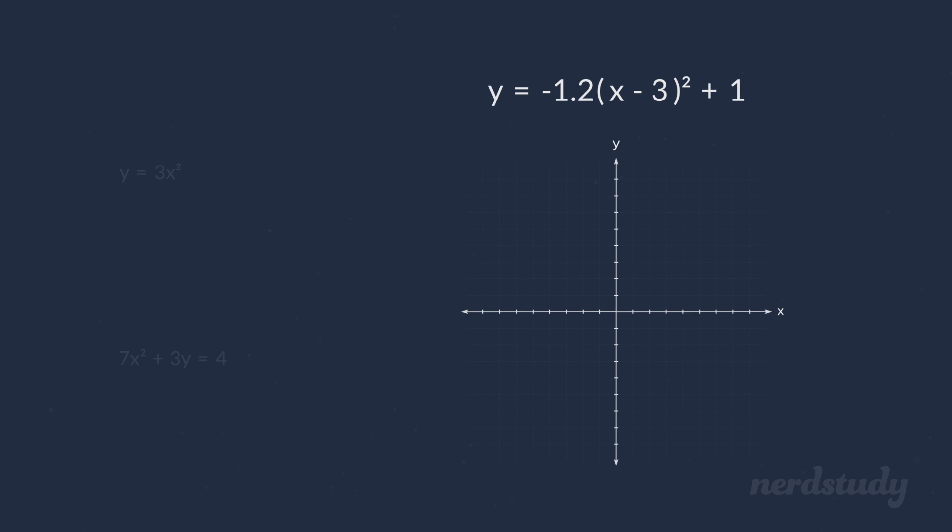This equation, on the other hand, has a negative a value. This means that the parabola will open downwards, and the vertex would sit at the highest point in the parabola, making it a maximum point.